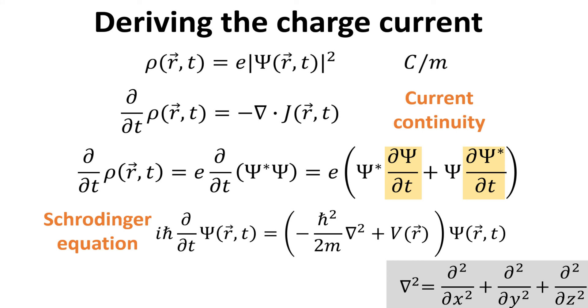In order to proceed, we recall the Schrödinger equation, which allows us to describe the rate of change of the wave functions in terms of the Hamiltonian multiplying by the wave function. The Hamiltonian contains the kinetic and potential energy terms as shown.